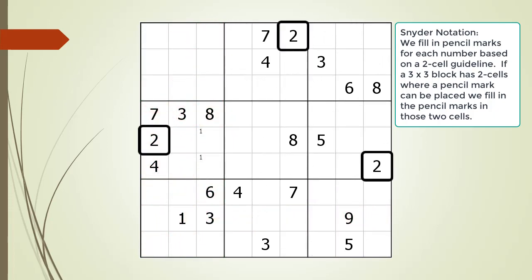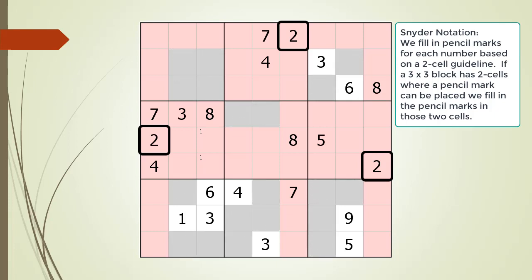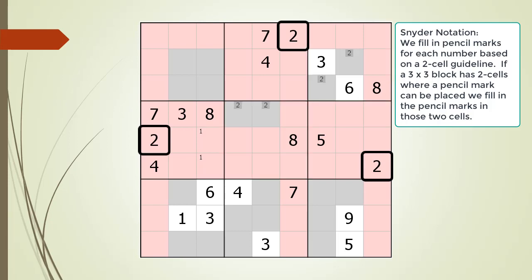We move to the number 2. All the cells having a 2 as a given or a value are now outlined in black. Based on the cells outlined, all the cells that cannot have 2 as a pencil mark are now highlighted in red. Consequently, all the cells where 2 as a pencil mark can be placed are now highlighted in gray. Block 3 and block 5 have exactly two cells highlighted in gray, so we fill in the pencil marks for the number 2 in those blocks.